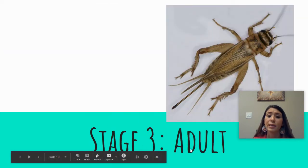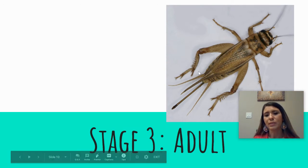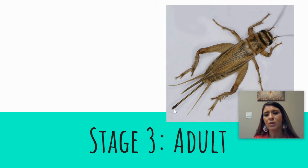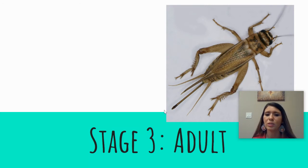Stage three is the final stage of a cricket's life cycle — it is now an adult. It has wings and this long reproductive spike. This identifies the cricket as a female; that spike or tube is how she lays her eggs.